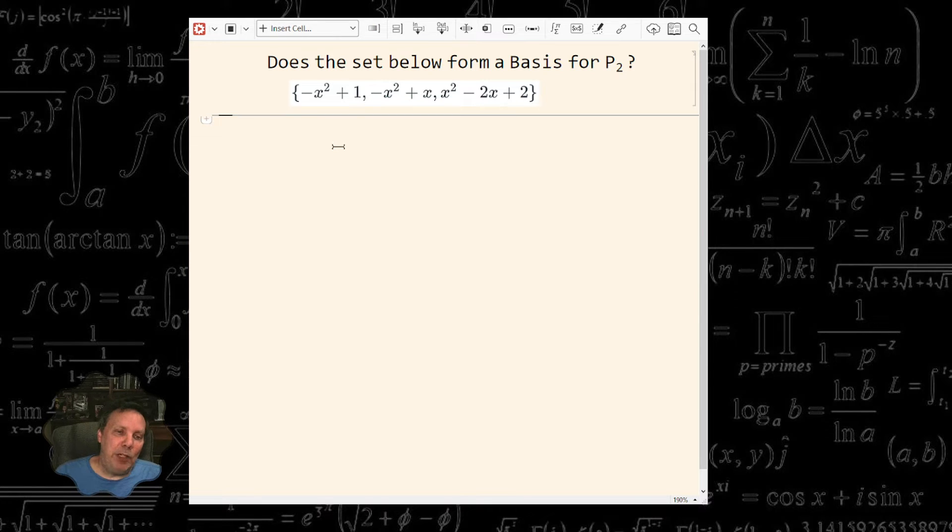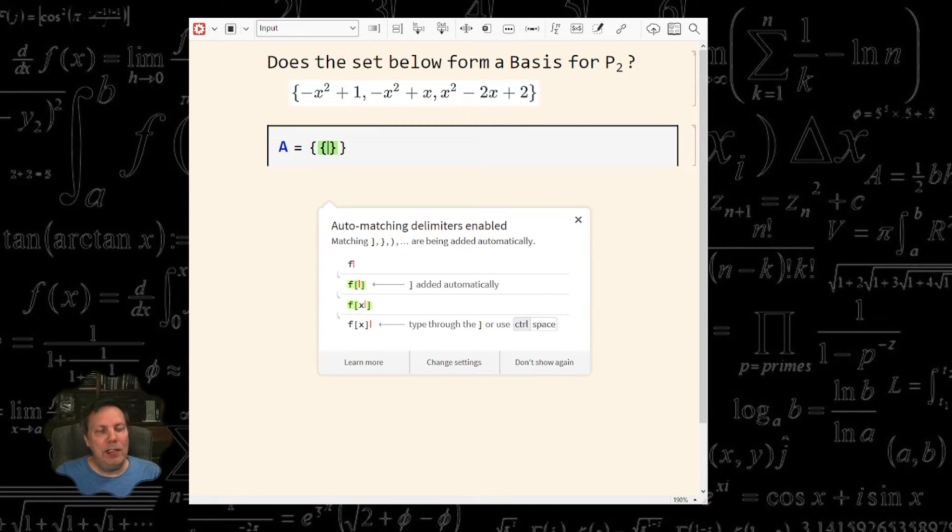So the way I'm going to approach this, what I'm going to do is I'm going to create a matrix and this matrix, each column is going to be one of these polynomials. What I'm going to do is pull out the coefficients of these. So I'll start with the constant coefficient and I'll work my way down to the x squared.